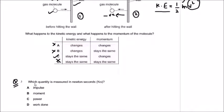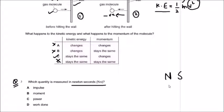Question number three: which quantity is measured in Newton-seconds? The options are impulse, momentum, power, and work done. Newton is the unit of force, and second is the unit of time. Force times time is impulse. So impulse is the correct answer.